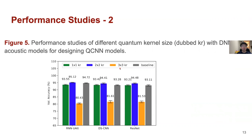Considering that right now we can only access a nine-qubit quantum computer commercially and through academic support via the IBM Q-Hub, we stop at three-by-three qubits. But we believe that with this kind of setup and the progress of the hardware, this solution could have more broad impact for different speech processing tasks like separation, enhancement, and speaker verification.